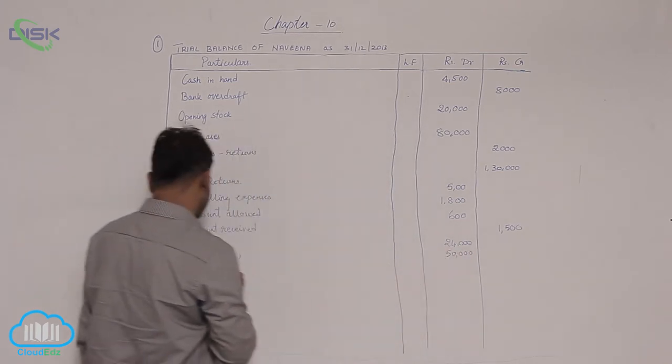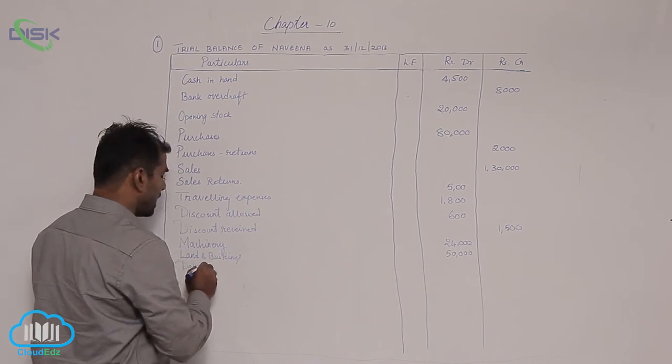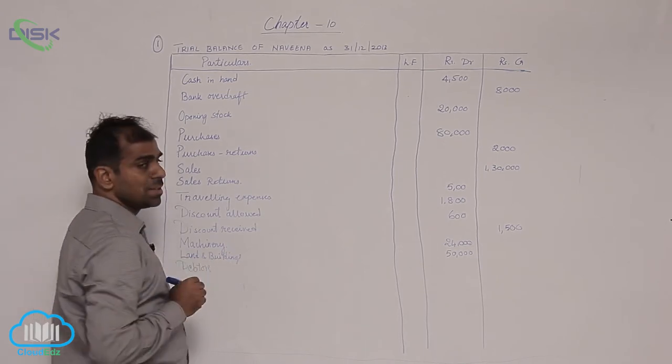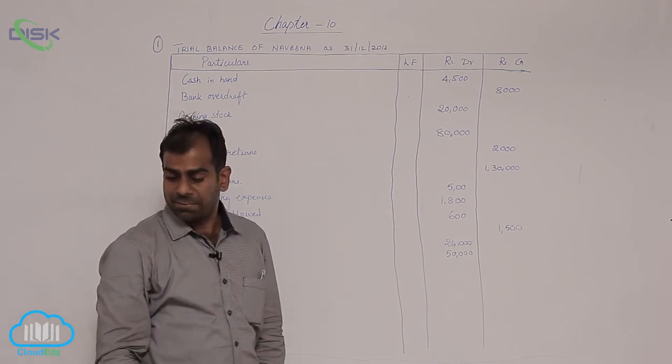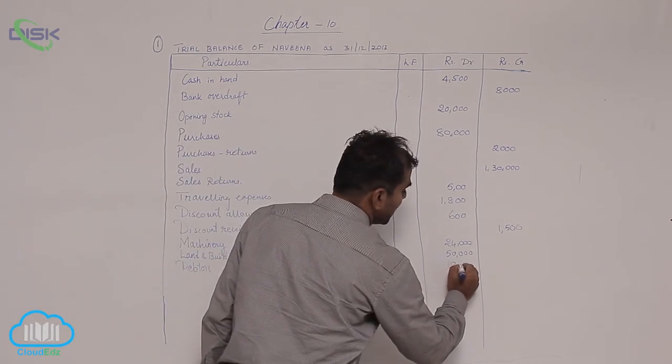Then you have debtors. You know debtors show debit balance. So debit balance of how much? 18,400. So 18,400 debit.